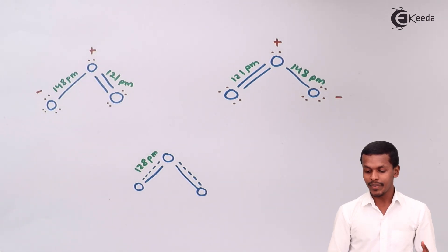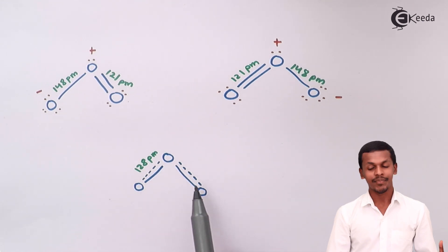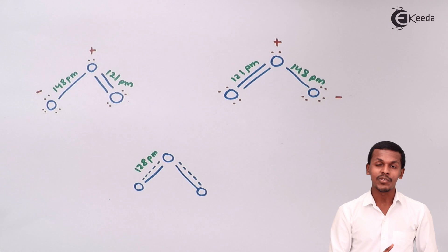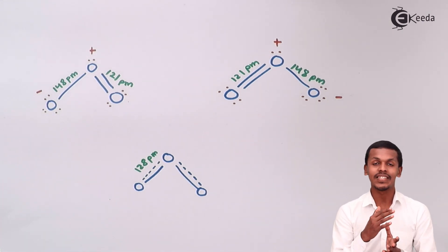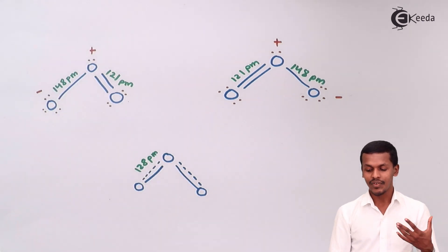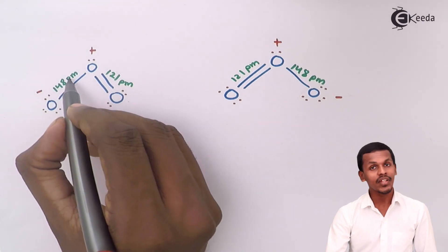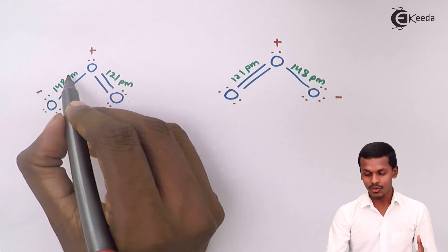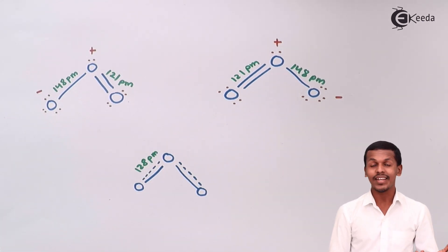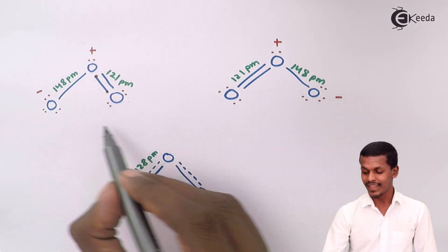We can name the atoms oxygen A, B, and C. In both structures, the position of the oxygen atoms remains the same — the only thing changing is the position of the electrons, which are known as delocalized electrons. There is a negative charge on one oxygen due to an extra electron, and a positive charge on another indicating it is electron-deficient. To fulfill its valency, the shifting of electrons takes place.